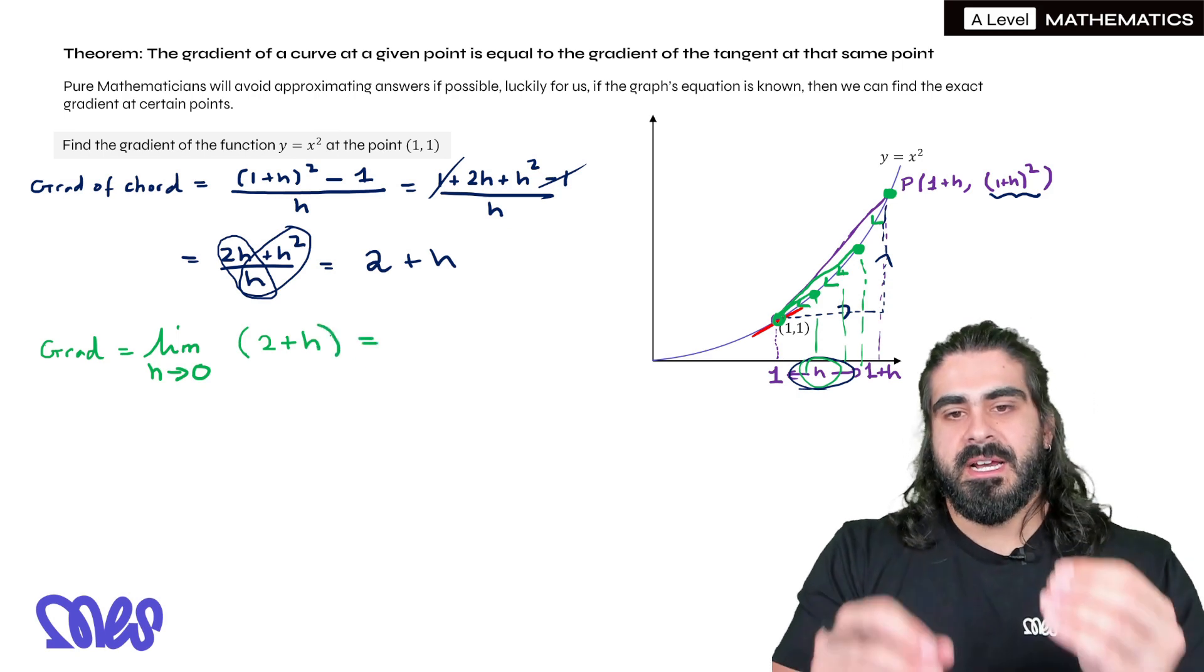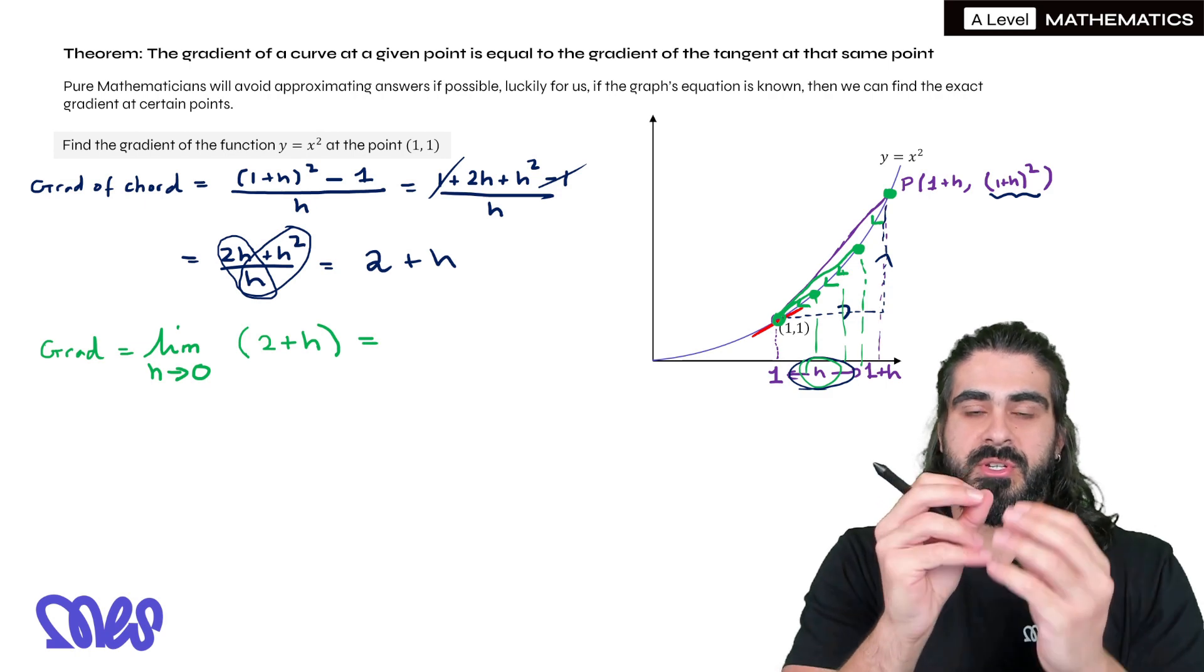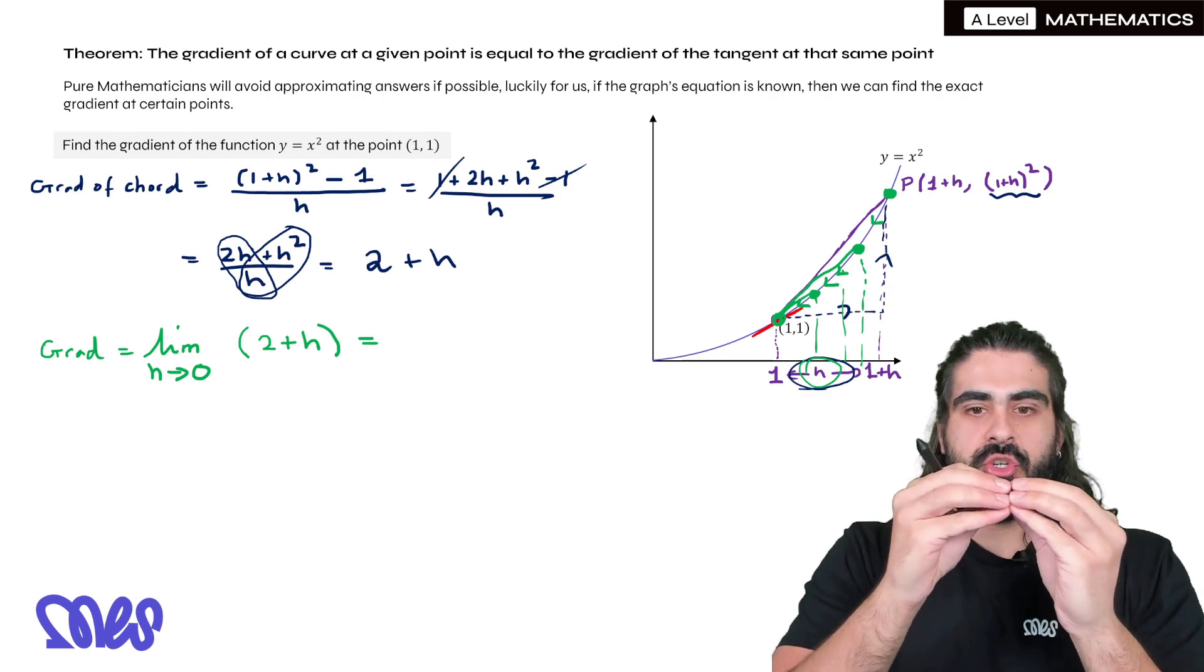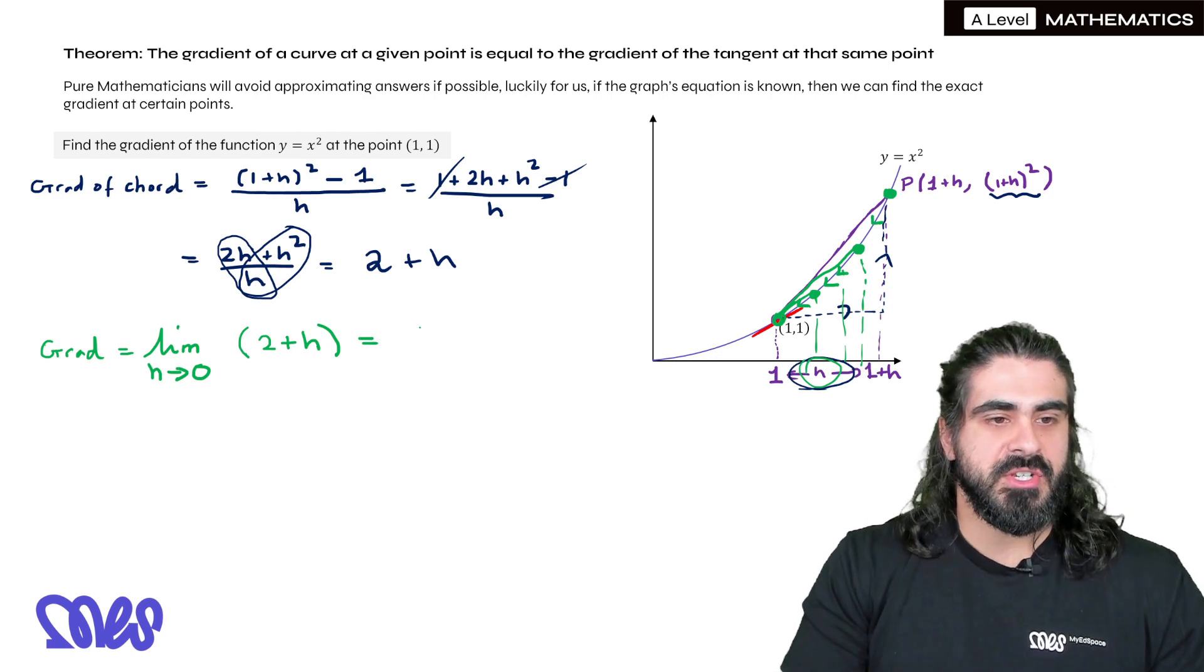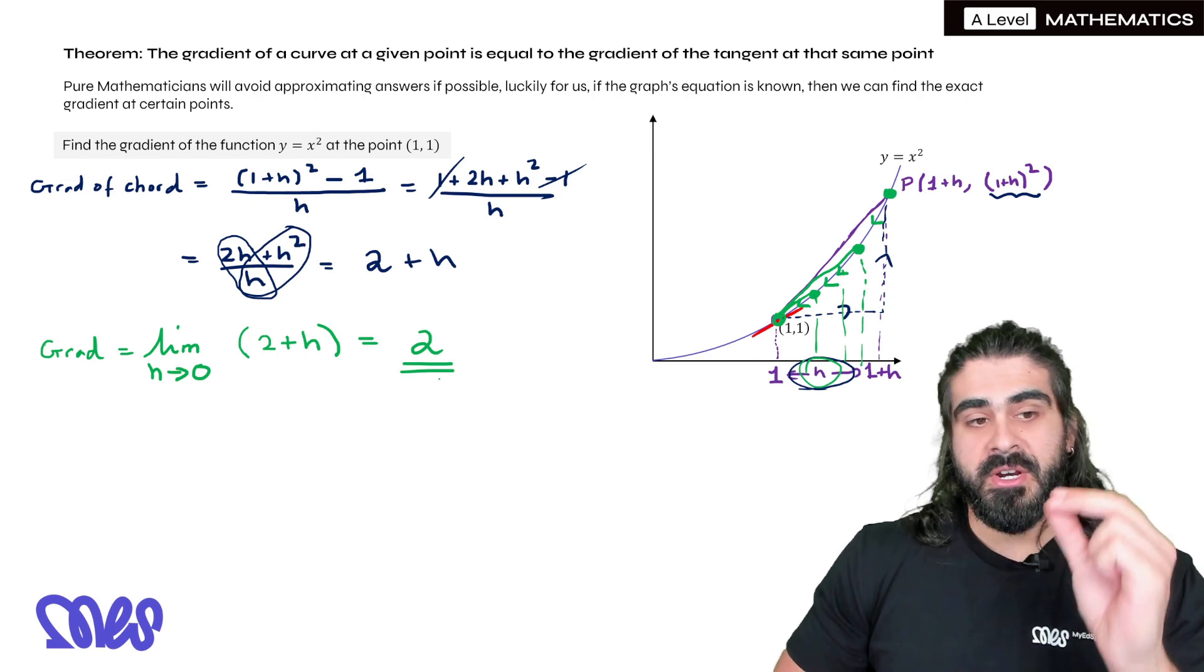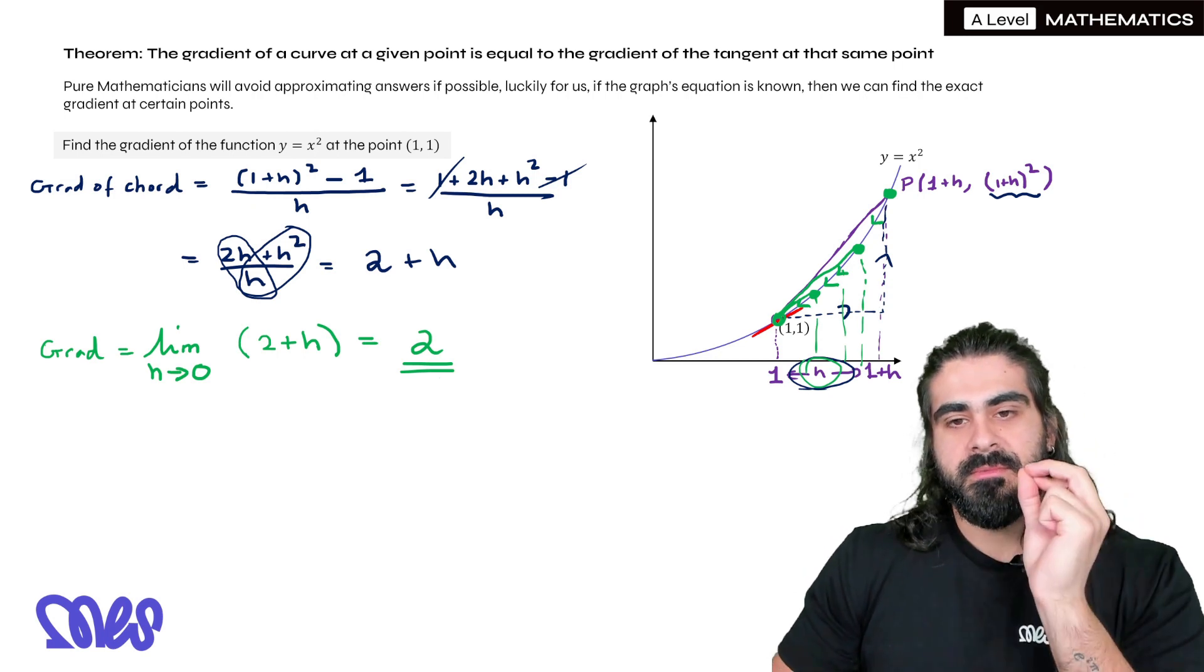And then when h is theoretically zero, we get the chord which will kind of trace the red line. So what does this give you when h is zero? We're left with 2. So the gradient of y equals x squared at the point (1, 1) is 2.